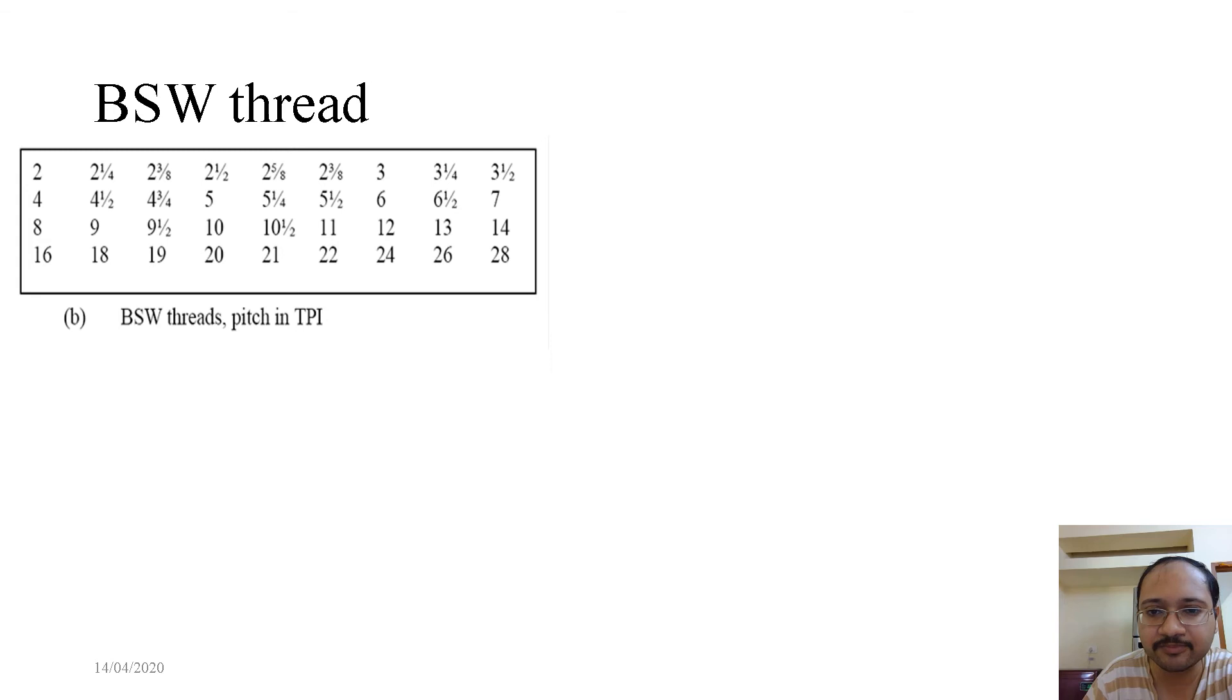So what is the pitch then? The pitch becomes 1 divided by TPI. That means if I am looking at an 8 threads per inch British Standard Whitworth thread, the pitch would be 1 by 8 inch.